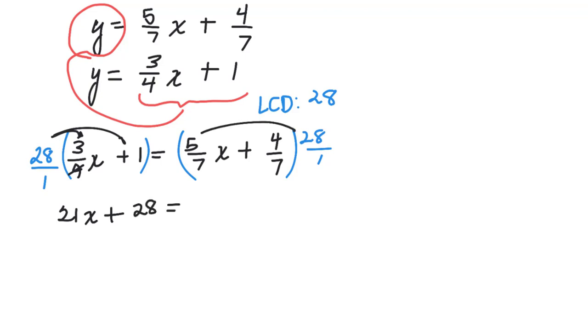Over here, 7 goes into 28 four times. 4 times 5 is 20. 7 goes into 28 four times. 4 times that 4 right there is 16. See how lovely that is? No fractions.